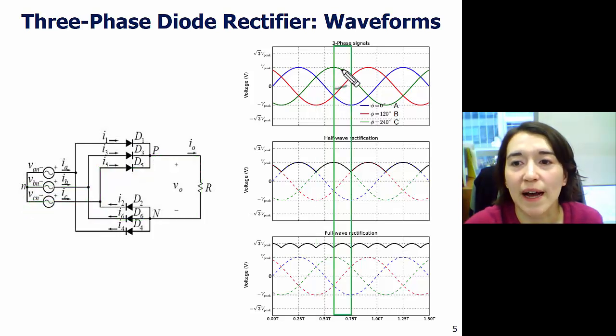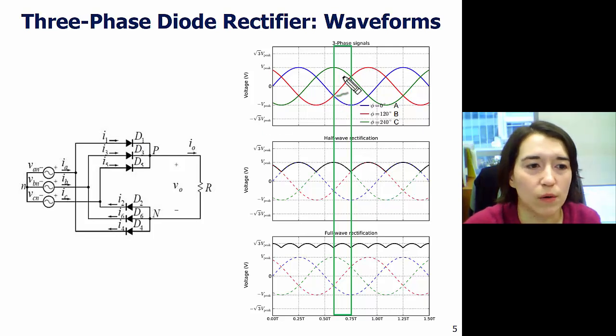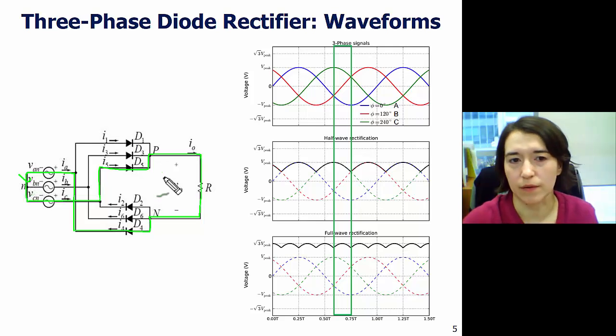In this phase, still C is highest, but now we've switched from B being the lowest to A being the lowest, so we're in this area. Again, we start from C. Current's going to flow through C, go through to our load, out here. Again, we pick the lowest voltage. In this case, it's A. So, A is going to be this guy, so diode number four. We're going to go through this way, and come back around. So, there's our path for current.